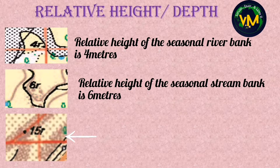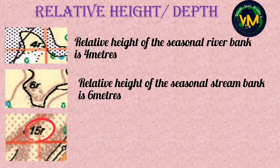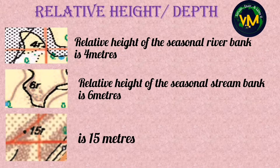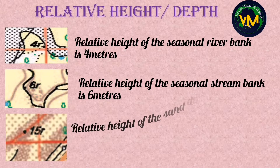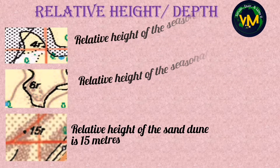Now look at the third picture. The cluster of brown dots are sand dunes. This 15R is black in color, so first write relative height, then the feature — sand dune — and then the height, 15 meters. So the answer is: relative height of the sand dune is 15 meters.